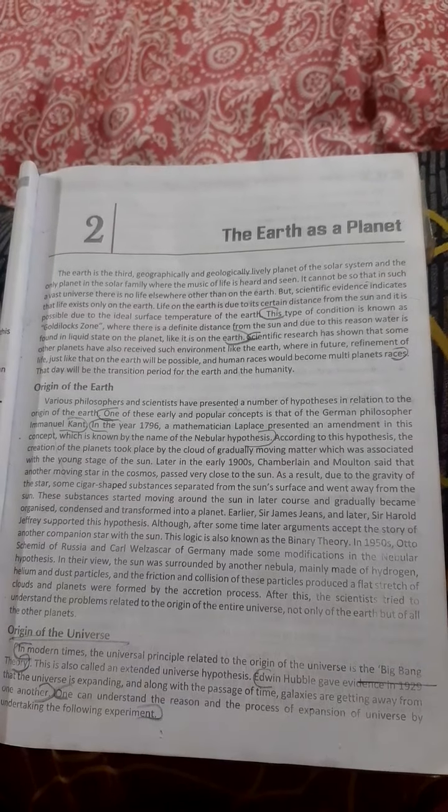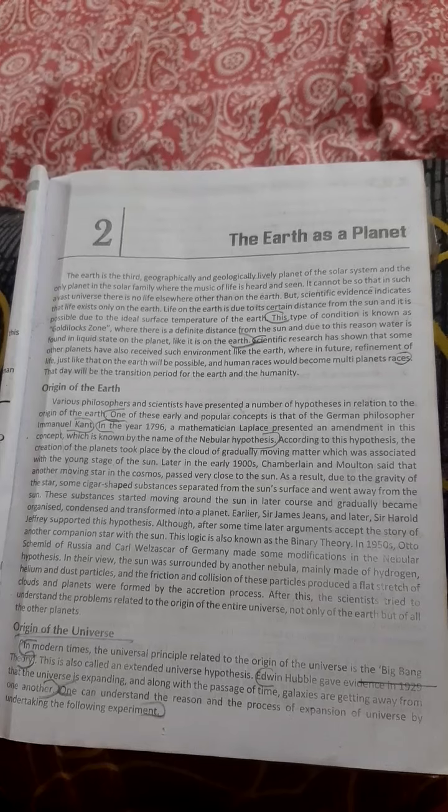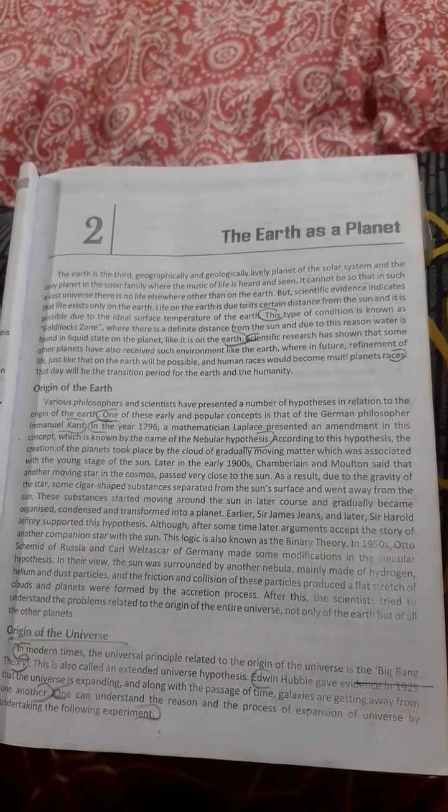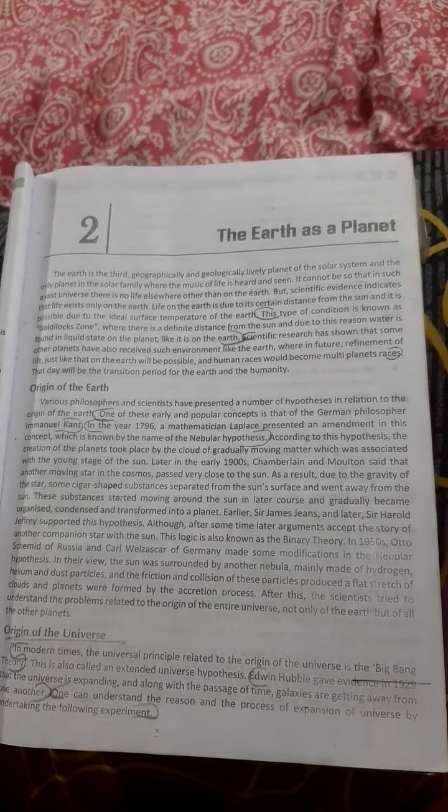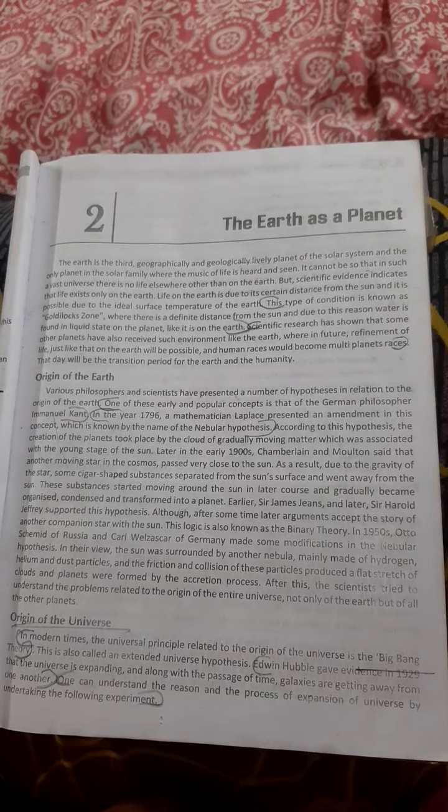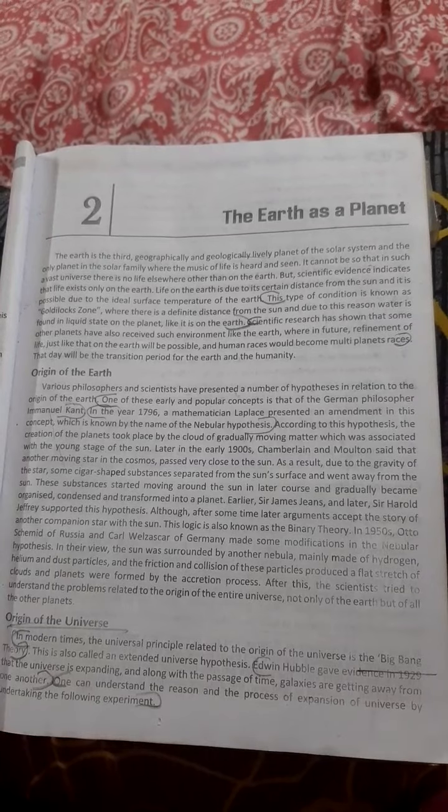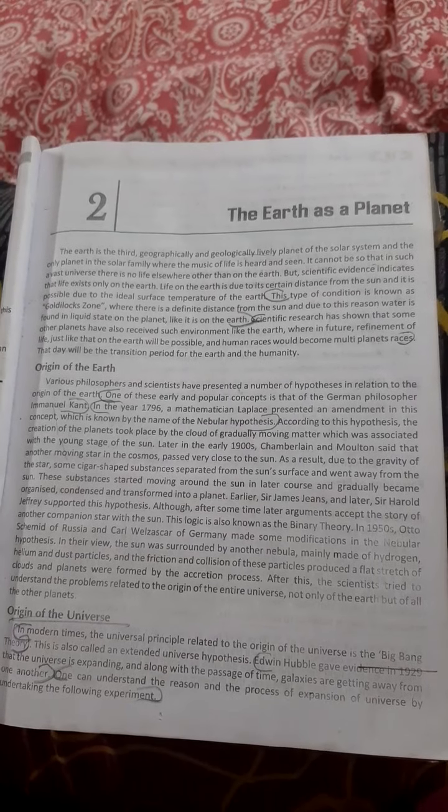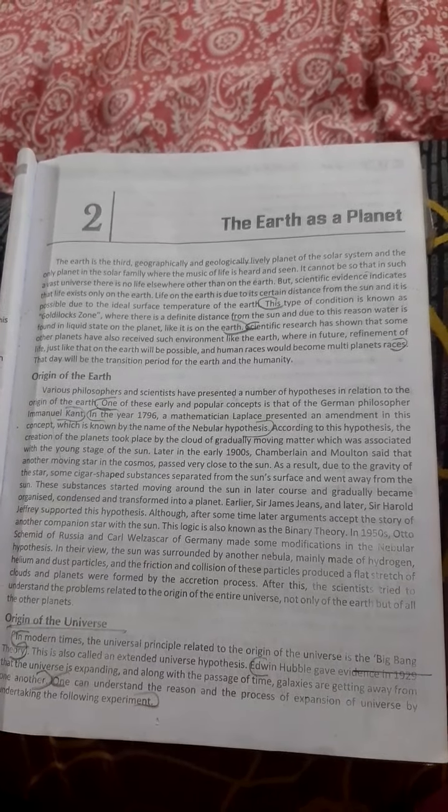some cigar-shaped substances separated from the Sun's surface and went away from the Sun. The substance that moved around the Sun later cools and gradually becomes organized due to the gravity of the Sun.